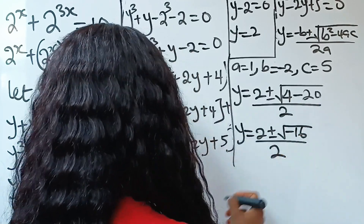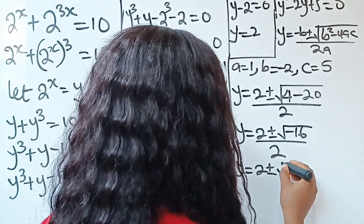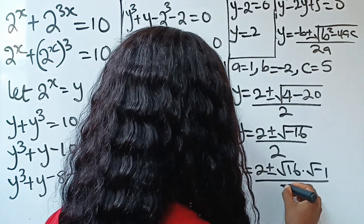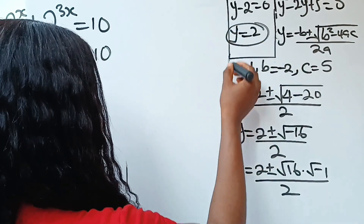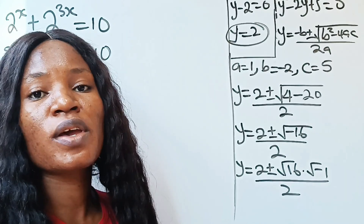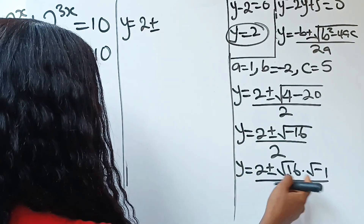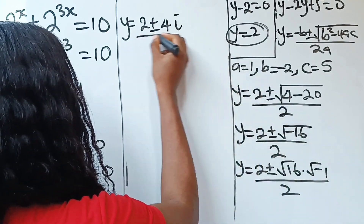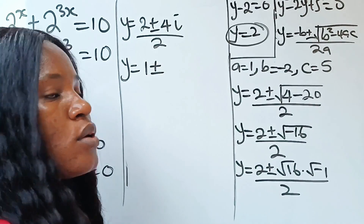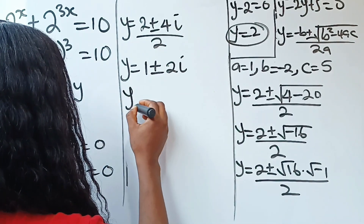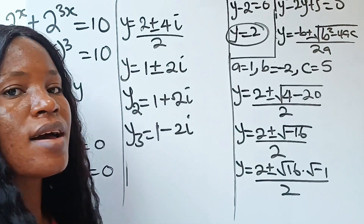So y equals 2 plus or minus square root of (4 minus 20) divided by 2, which gives square root of minus 16 divided by 2. We write square root of minus 16 as square root of 16 times square root of minus 1, giving 4i. Therefore y equals (2 plus or minus 4i) divided by 2, which simplifies to 1 plus or minus 2i. So the second value is y equals 1 plus 2i, and the third is y equals 1 minus 2i.